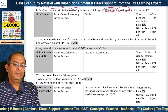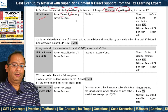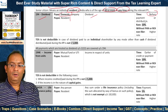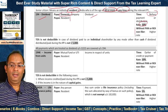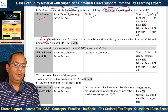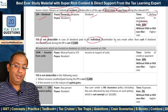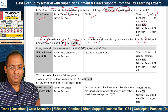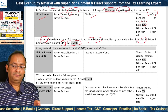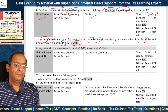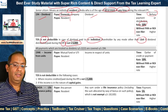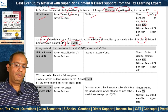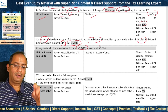Section 194 covers dividend. The payer should be a domestic company and the payee should be a resident. TDS is to be deducted before payment or distribution at the rate of 10%, and a higher rate applies for without-PAN or ROI non-filer cases. TDS is not deductible where dividend is paid to an individual shareholder by any mode other than cash, if dividend distributed or paid during the financial year is not more than Rs. 5,000. All payments treated as dividend under section 2(22) are covered under section 194.